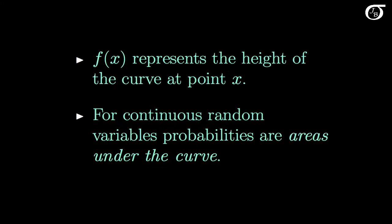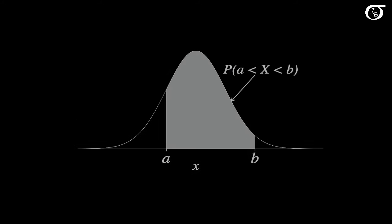An important notion is that for continuous random variables, probabilities are areas under the curve. Here's a continuous probability distribution for a random variable x, and the height of the curve is represented by f of x. And the probability the random variable x falls in between two values a and b is simply the area under the curve between a and b.